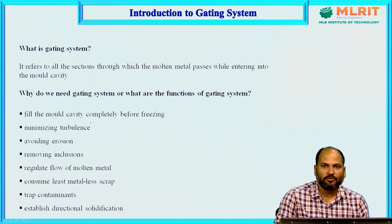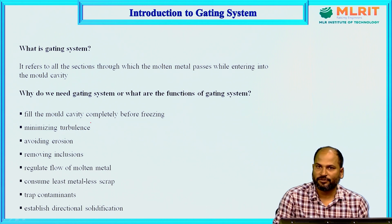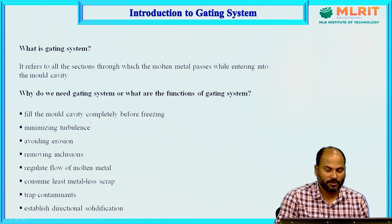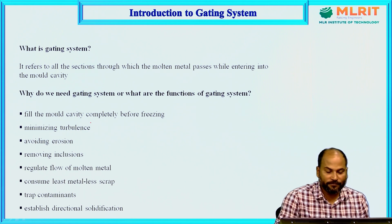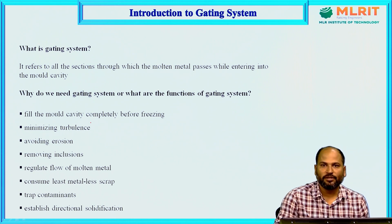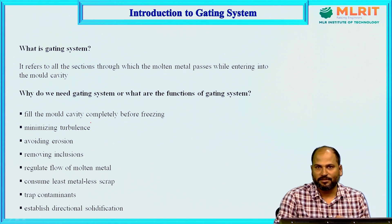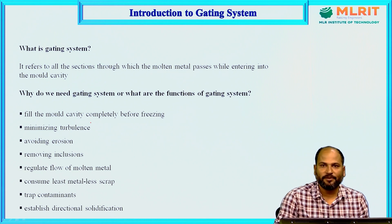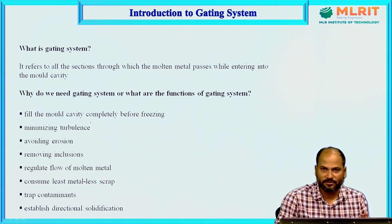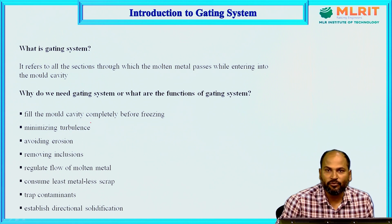The very important question is: why do we need a gating system, or what is its function? There are many points. The first is it should fill the mould completely before freezing. Suppose we are pouring molten metal from the pouring basin — if it starts solidifying or freezing before reaching the mould cavity, that is a problem. So it should fill the mould cavity completely before freezing.